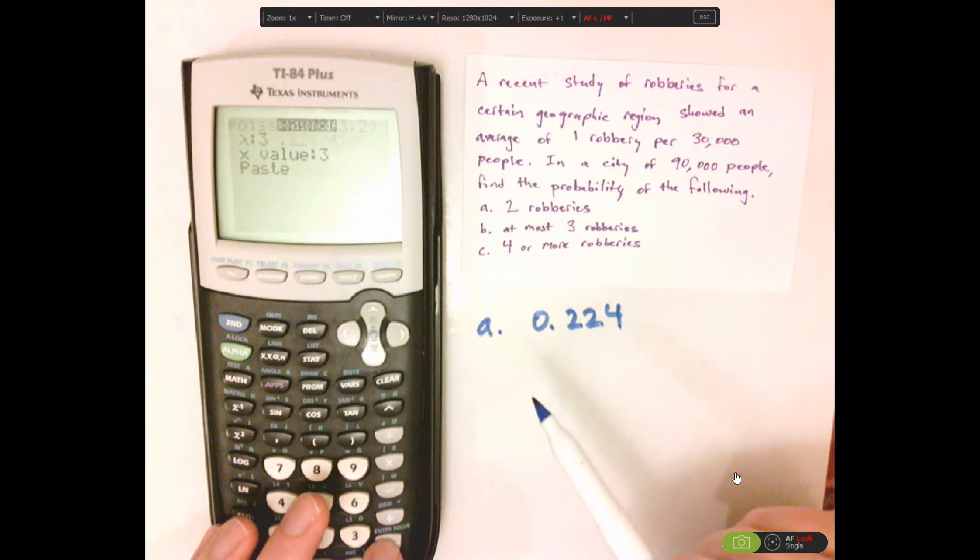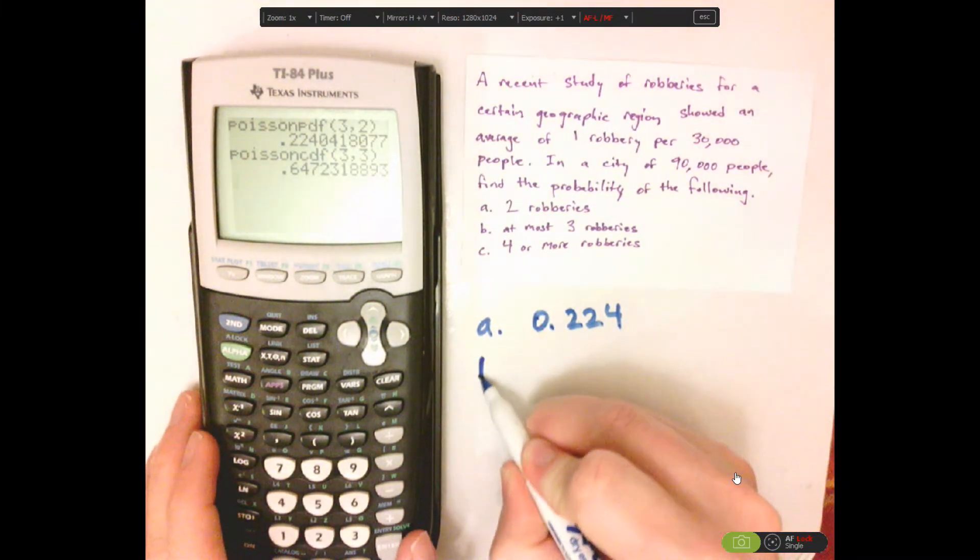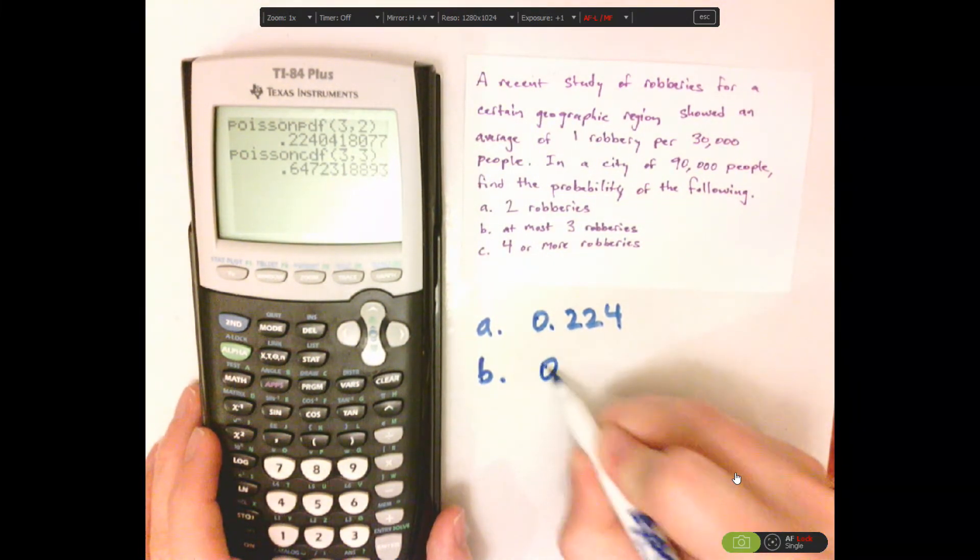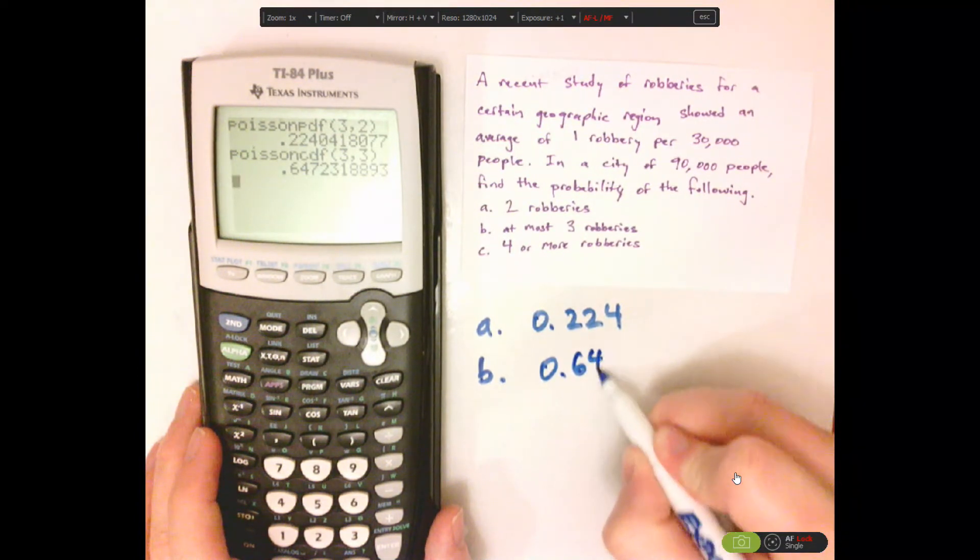And then paste, and then enter. So B is 0.647.